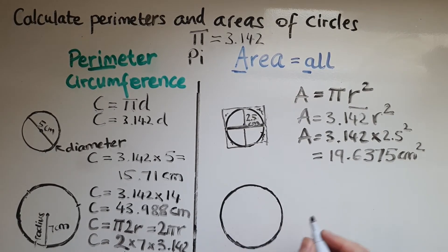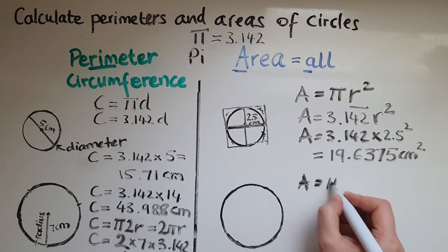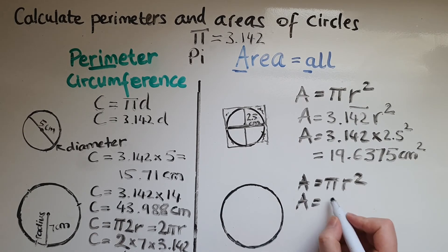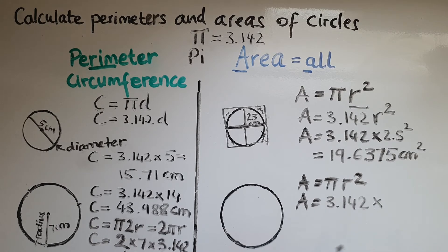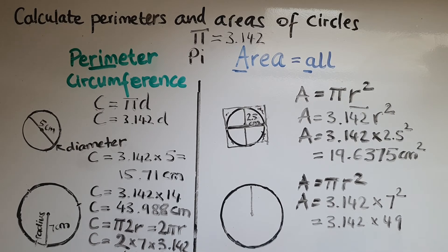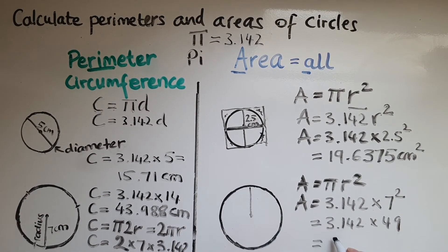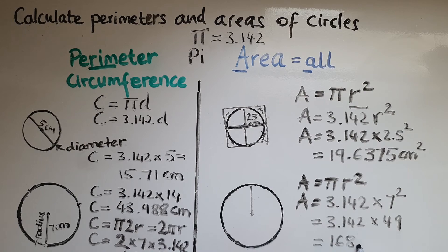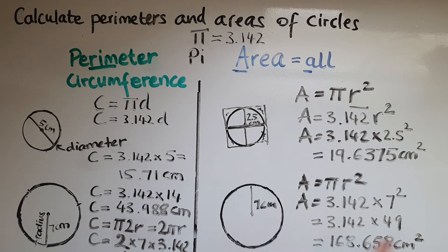Now we'll use the formula to work out the area of the other circle. Area equals pi r squared. Pi is 3.142, multiplied by the radius of seven centimeters squared — so 3.142 times 49 — which equals 153.958... wait, that is 168.658 centimeters squared. We use centimeters squared because we're talking about area. If the input were meters, the answer would be in meters squared.